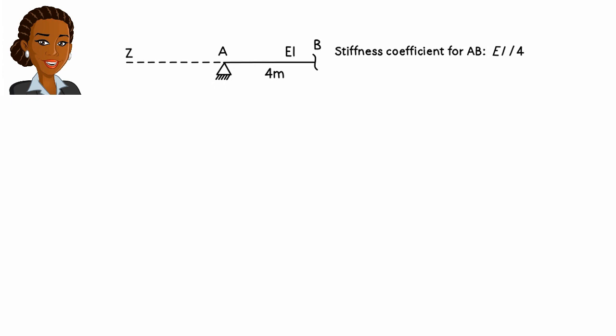For a pin connection, the imaginary member has a stiffness coefficient of 0. That is, there is nothing to the left of A that would contribute to the overall stiffness of the joint. We could say the member has a modulus of elasticity of 0.